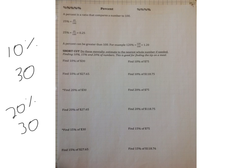So now we're just going to look at some shortcuts on finding percents of numbers when dealing with 10, 15, and 20% of numbers. This is good for finding the tip on a meal. So we're going to do these mentally and estimate to the nearest whole number if needed.